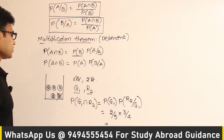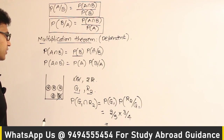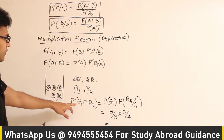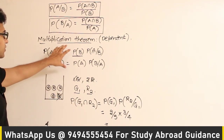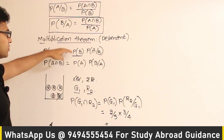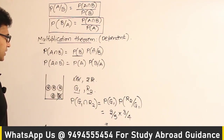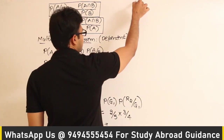So the answer is 2/5 times 3/4. This is the meaning of the multiplication theorem using conditional probability. If events are dependent, we use the conditional probability formula and convert it to the multiplication theorem.